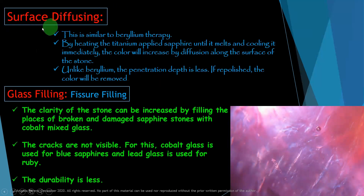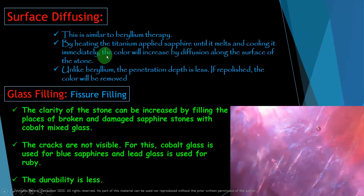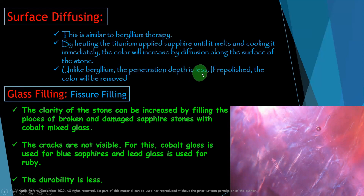Another treatment is surface diffusion. What is surface diffusion? It is similar to beryllium treatment and is also illegal. By heating a titanium-applied sapphire until it melts and cooling it immediately, the color increases by diffusion along the surface of the stone. Unlike beryllium, the penetration depth is less. If repolished, the color will be removed.